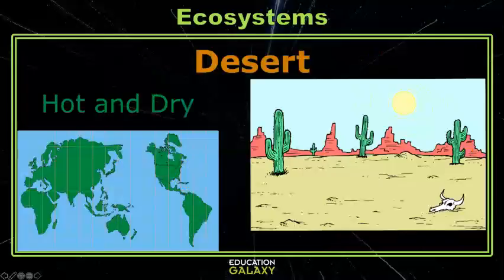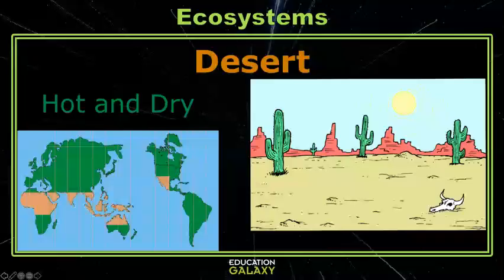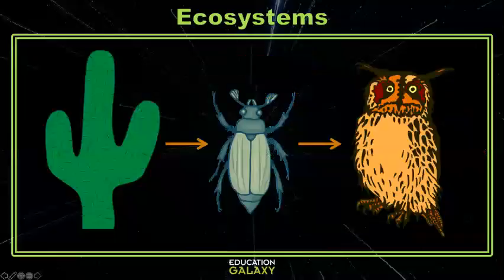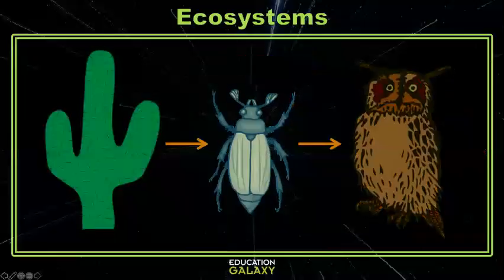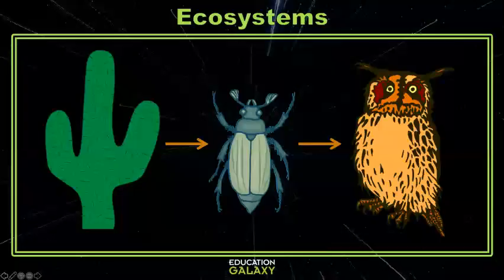Another ecosystem is the desert. These are areas that are very hot and very dry. A simple food web might include a cactus, a beetle, and a desert owl. Fewer plants and animals live here due to limited water.